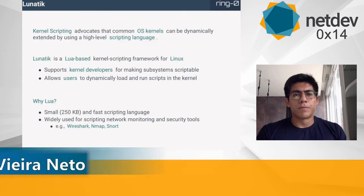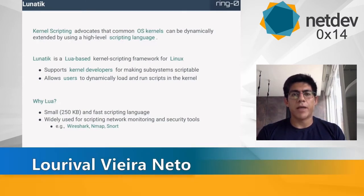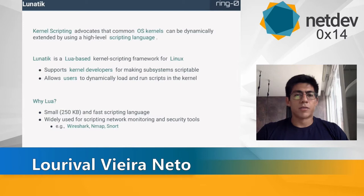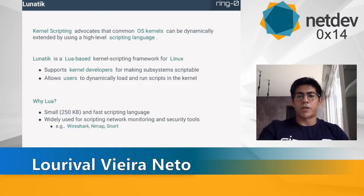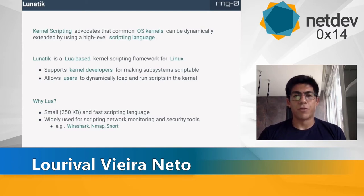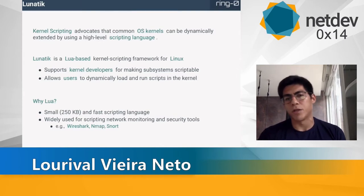We have been working on scripting operating system kernels since 2008. Lunatic is our kernel script framework for Linux, which supports developers to make their subsystems scriptable and also allows users to dynamically load their scripts into the kernel. We believe that Lua is an adequate choice for scripting the kernel because it's quite small and fast, and widely used for scripting network tools such as Wireshark, Nmap, and Snort. In this presentation we're going to focus on scripting two Linux network subsystems, NetFilter and XDP. We have developed two bindings respectively for these subsystems: NF Lua and XDP Lua.